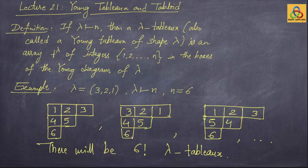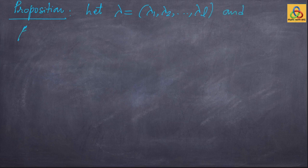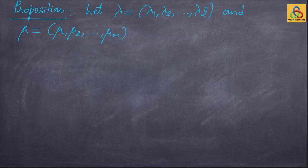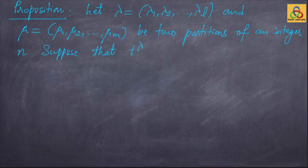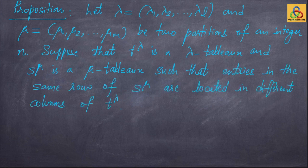It is very important to know how two partitions are related under the domination order, and for that purpose we need λ-tableaux. Information on λ-tableaux of two partitions of an integer helps us conclude whether one partition is bigger than or equal to another. Let λ = (λ₁, λ₂, …, λ_l) and μ = (μ₁, μ₂, …, μ_m) be two partitions of n. Suppose that T_λ is a λ-tableau and S_μ is a μ-tableau, with the condition that entries in the same row of S_μ are located in different columns of T_λ.